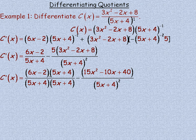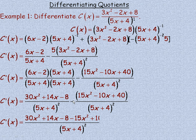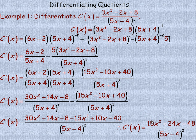Expanding: 6x times 5x is 30x squared; 6x times 4 is 24x and negative 2 times 5x is negative 10x, giving 14x; negative 2 times 4 is negative 8. Then distributing the 5 gives negative 15x squared plus 10x minus 40. Collecting like terms: 30x squared minus 15x squared is 15x squared; 14x plus 10x is 24x; negative 8 minus 40 is minus 48. So the derivative is 15x squared plus 24x minus 48 over 5x plus 4 squared.